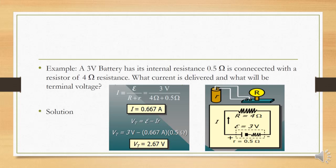In the circuit, the load resistance can be considered as a bulb and the battery has its internal resistance of 0.5 ohms. The 3 volts is the total EMF of the battery. Now we will calculate the power in the circuit.